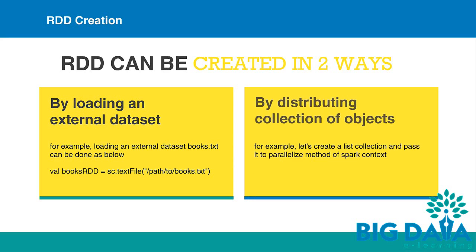The other way to create an RDD is by distributing a collection of objects. For example, here we are creating a list which contains two elements, red and blue, and passing the list to the parallelize method of the spark context object. This is assigned to an RDD called colors RDD.